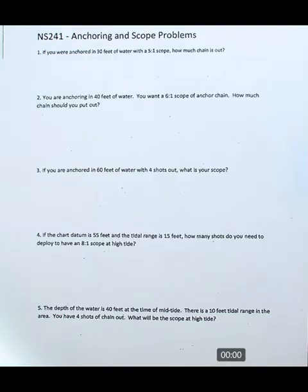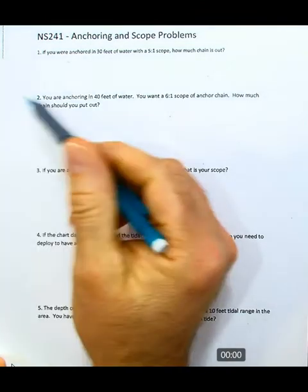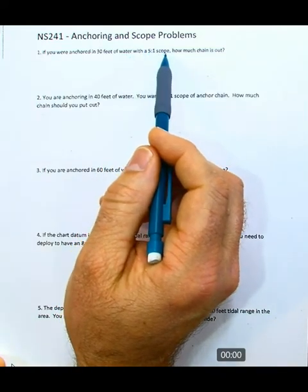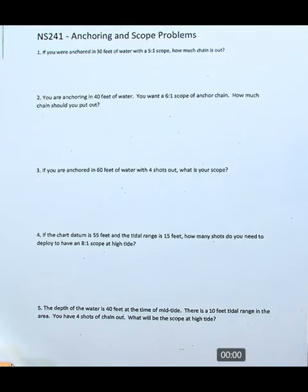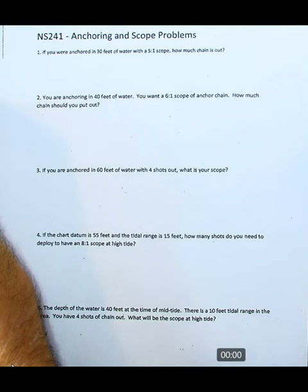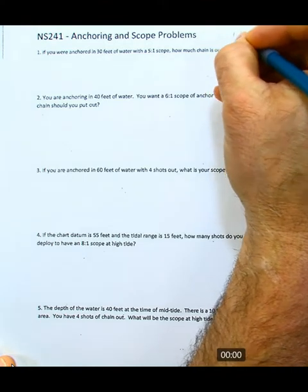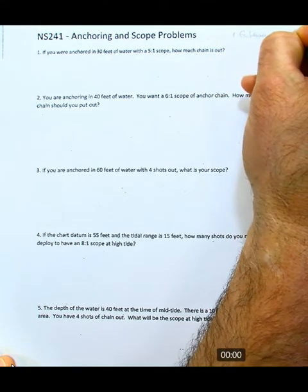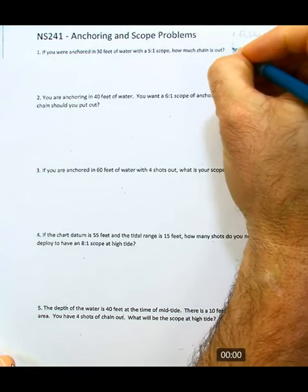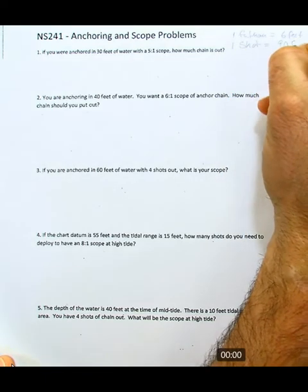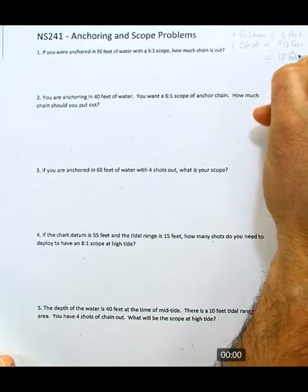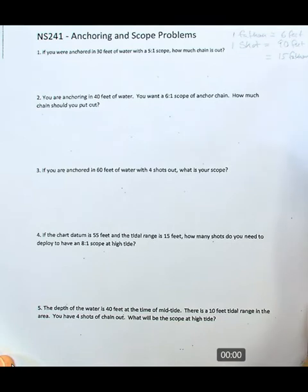Now we're going to work the problems. Problem 1: if you're anchored in 30 feet of water with a scope of 5 to 1, how much chain would you have out? Some key unit conversions to remember: 1 fathom equals 6 feet, and 1 shot equals 90 feet, which is 15 fathoms.